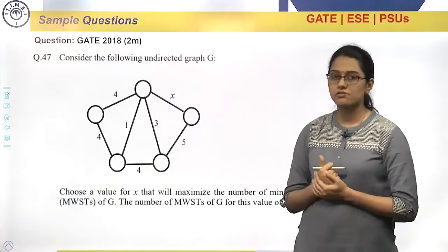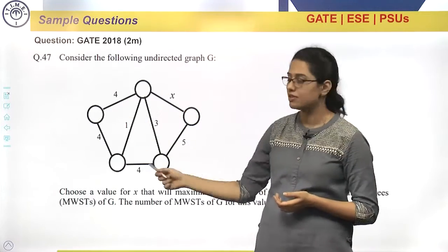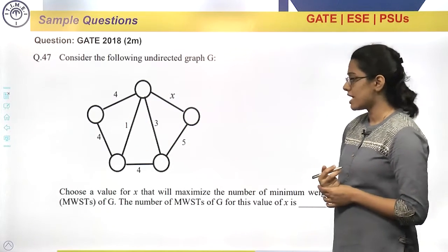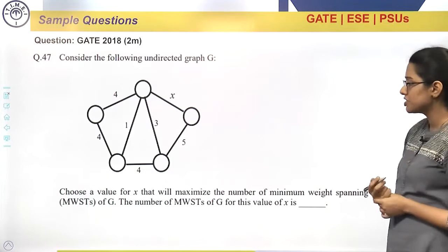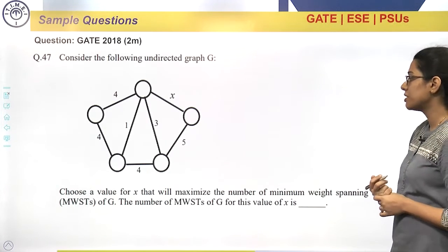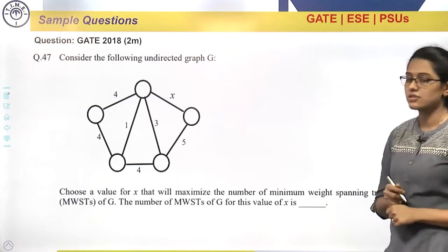Similarly, this question also, see, consider the following undirected graph. So graph is given, the weights are also given. Choose a value for x that will maximize the number of minimum weight spanning trees of G. The number of minimum weight spanning trees of G for this value of x is...